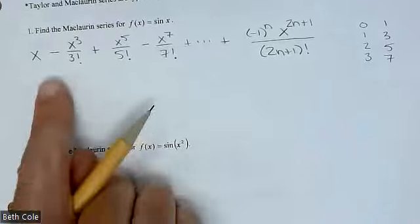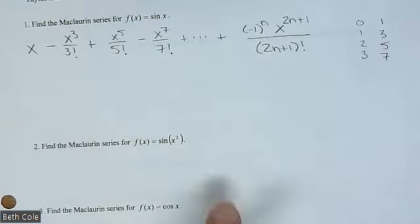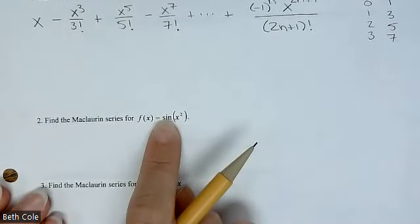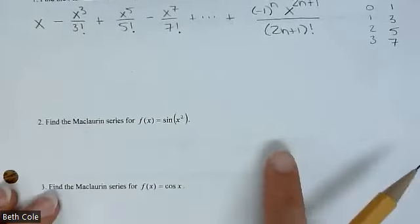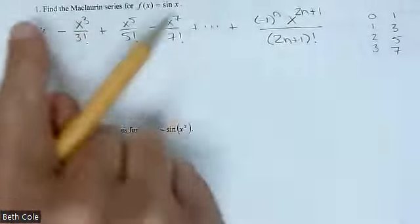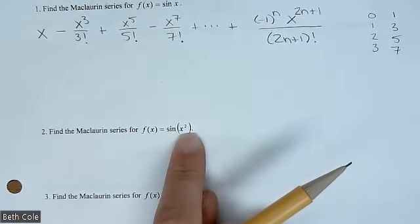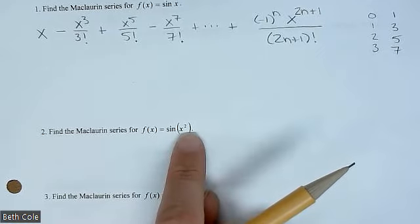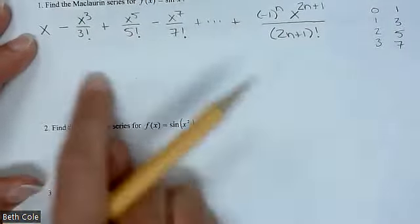For number 2, that was the parent function — the general one. Now we're going to transform them. Instead of sine of x, this is sine of x squared. So instead of x, you're going to take all of this and plug in x squared. Wherever there's an x, you're going to replace it with x squared. It's really just algebra — it's not even calculus.